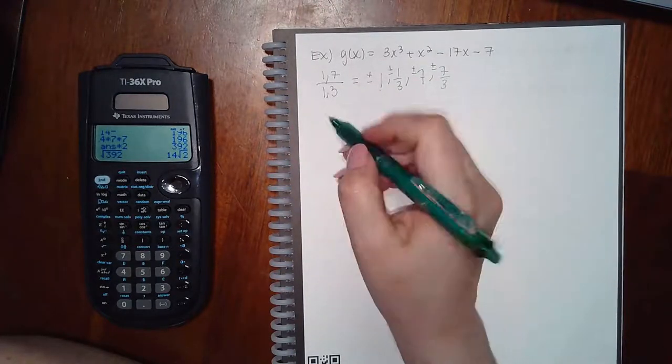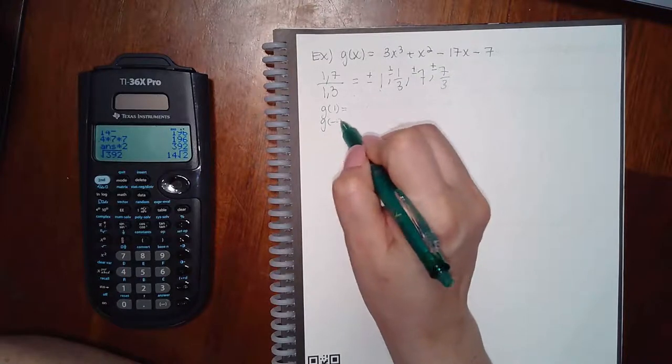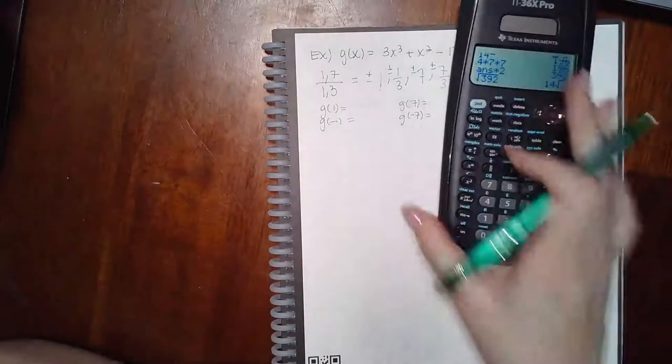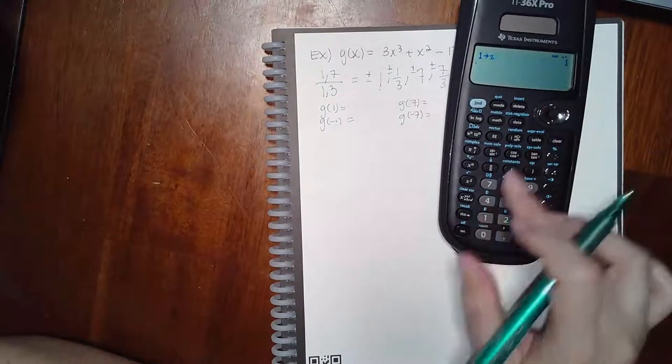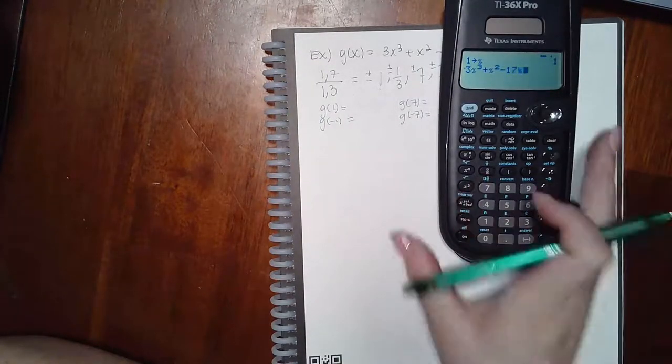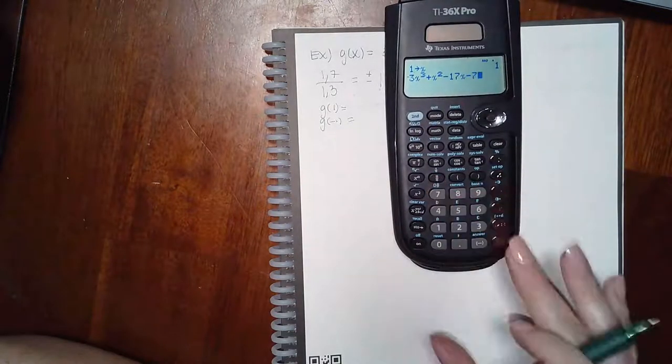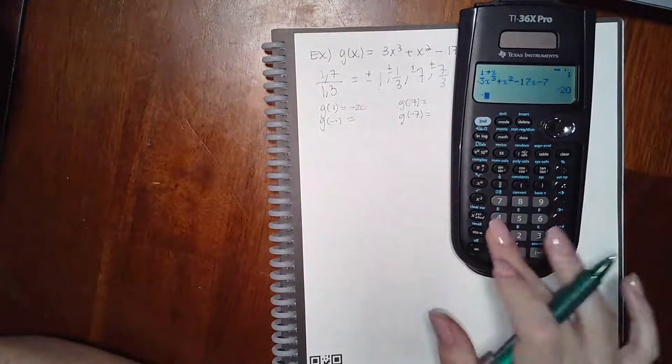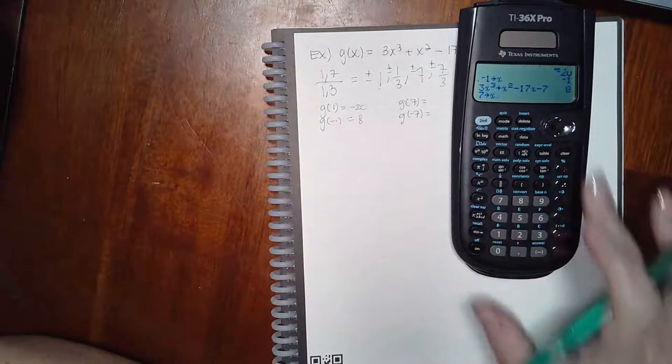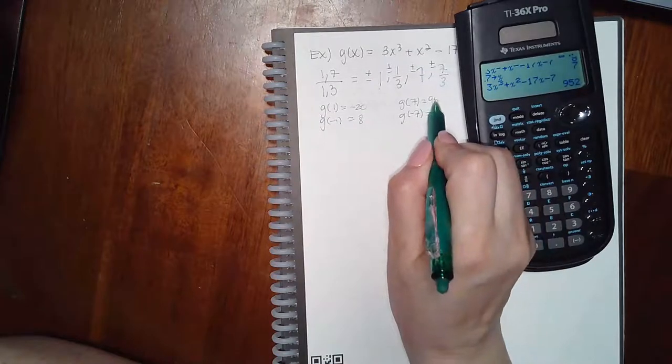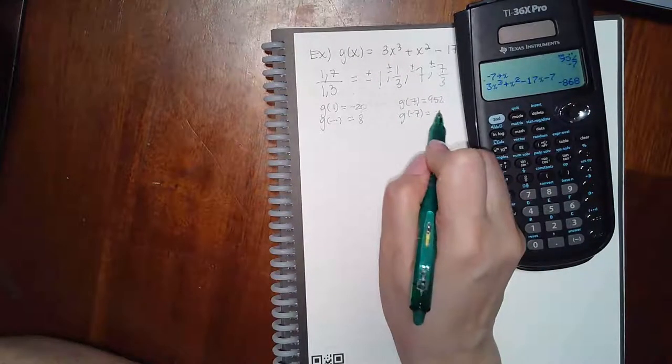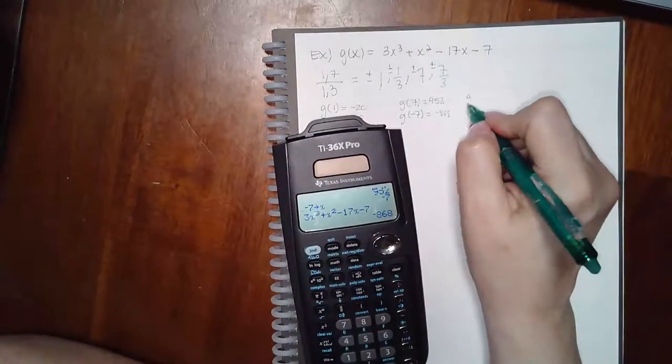And then to find the first one, we just start using the remainder theorem. We'll try the whole numbers first, and then we'll move on to the fractions if we have to. So 3x to the third plus x squared minus 17x minus 7. So I get negative 20, I get 8, I get 952, I get negative 868.